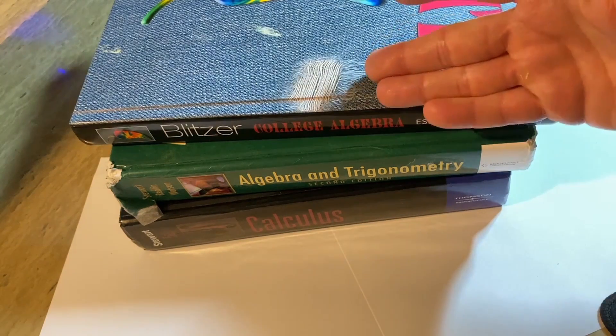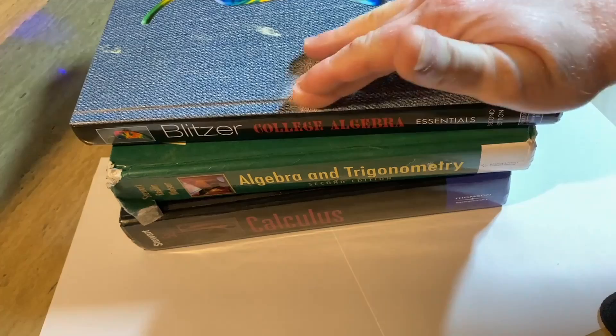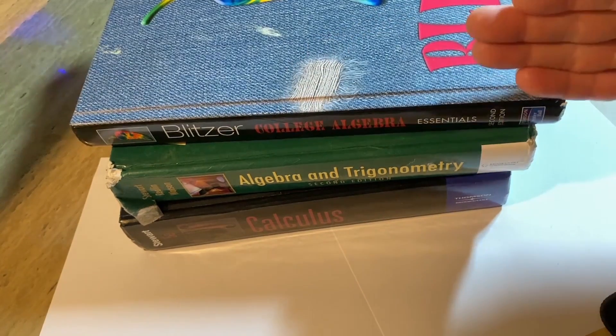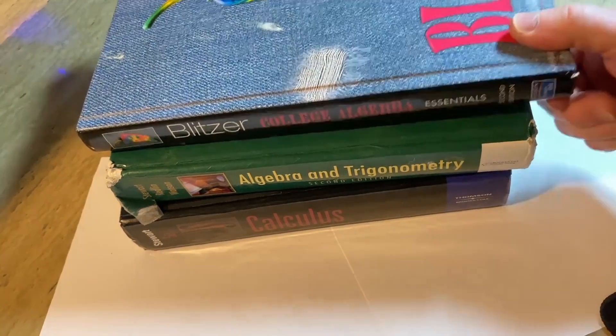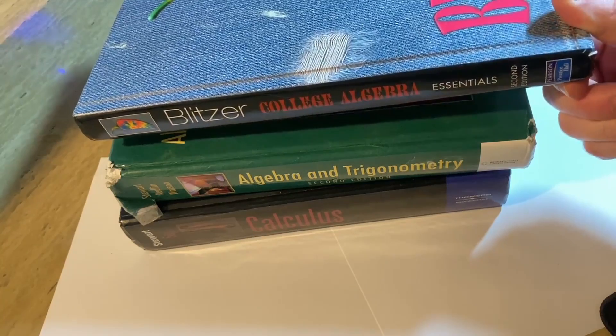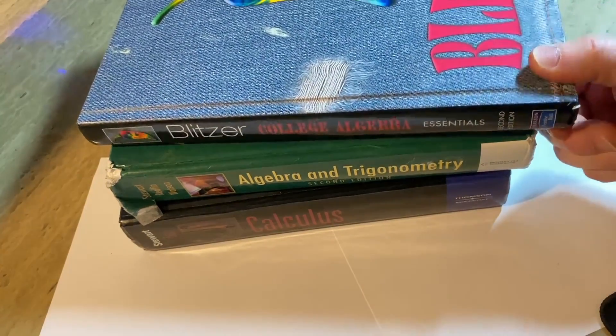You might end up here at the beginning or somewhere before it, but let's assume you start with college algebra. And then after that, it's a progression. So you've got three books here. Blitzer College Algebra Essentials.